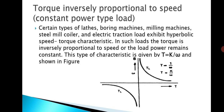Next, torque inversely proportional to speed — this is the constant power type load. Certain types of lathes, boring machines, milling machines, steel mill coilers, and electric traction loads exhibit hyperbolic speed-torque characteristics. In such loads, the torque is inversely proportional to the speed and the load power remains constant. When speed increases, torque decreases, and when torque increases, speed decreases.